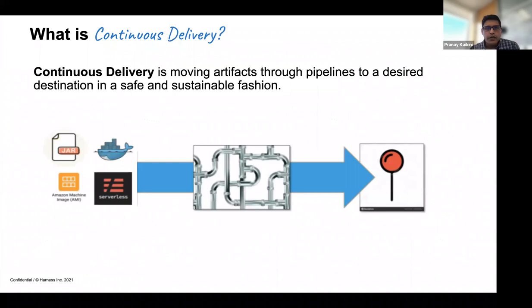Continuous delivery is nothing but moving artifacts which have been built in a prior step through a set of pipelines — this could be approvals, checks, and so forth — to a desired destination in a safe and sustainable fashion. The artifacts could be of different kinds: jar files, AMIs, Docker images, serverless artifacts, and so on.